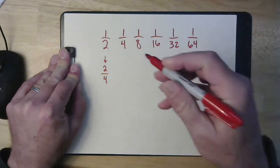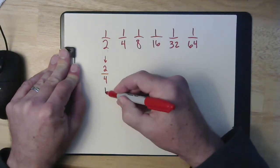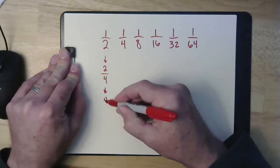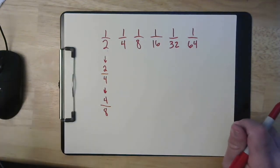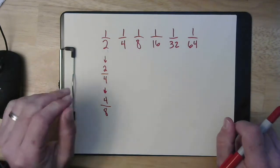So if I want to know how many eighths are in a half, I double that again, and I'll end up with this, with four eighths. So it's really easy to make halves into eighths.